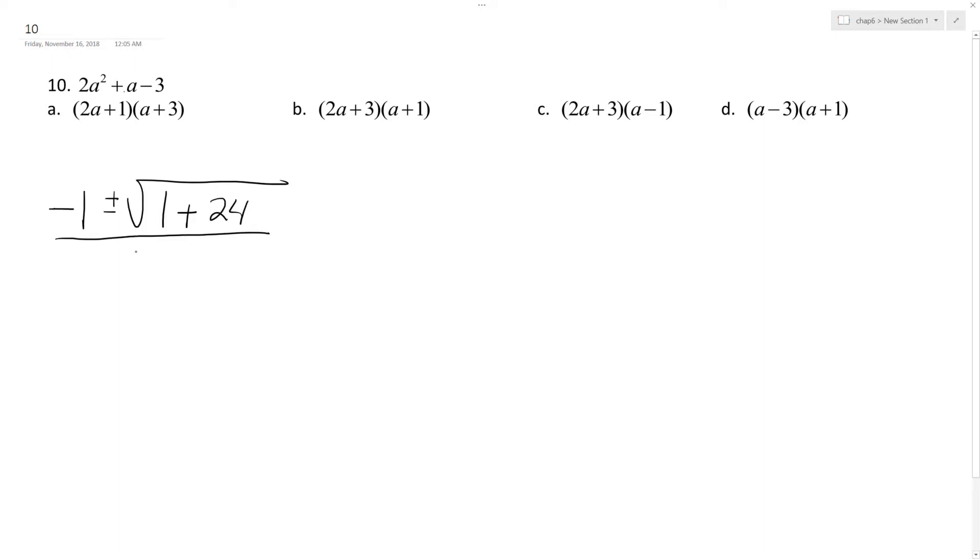2A, so that would be 2 times 2, which would be 4. So this ends up being negative 1 plus or minus the square root of 25, which is plus or minus 5, over 4.